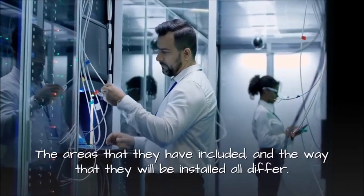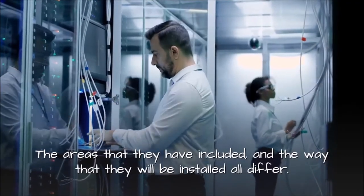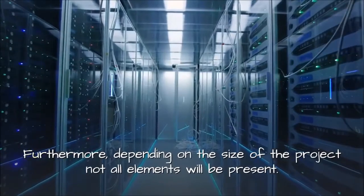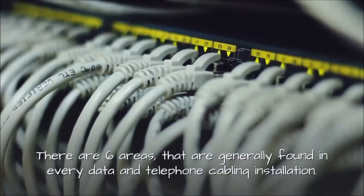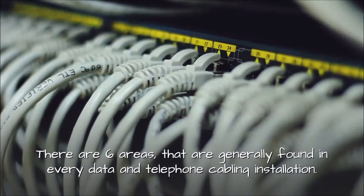The areas that they have included and the way that they will be installed all differ. Furthermore, depending on the size of the project not all elements will be present. There are six areas that are generally found in every data and telephone cabling installation.